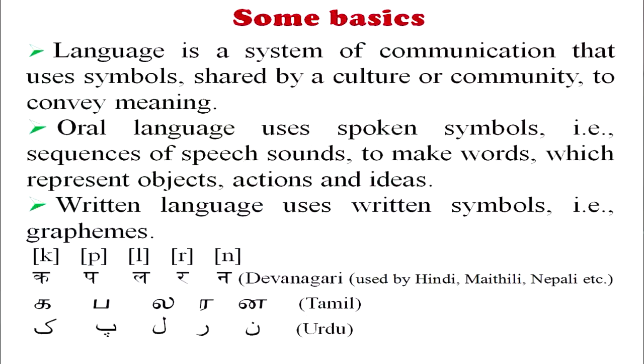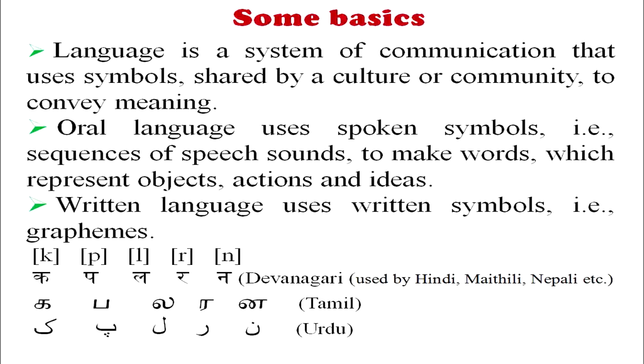Before we talk about the features of human language, let us talk about the general basic things about language. It is generally agreed that language is a system of communication that uses symbols shared by a culture or community to convey meaning. We have two types: oral language and written language. Oral language is primary — we first learn to speak and then learn to write.